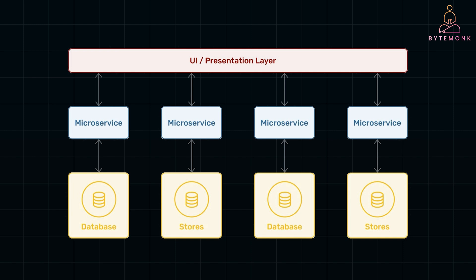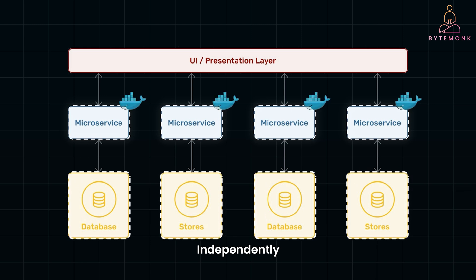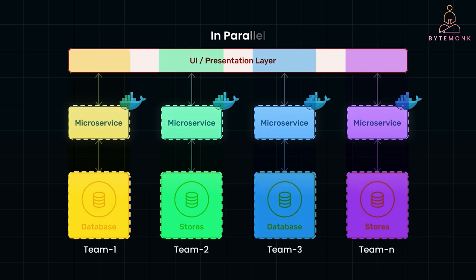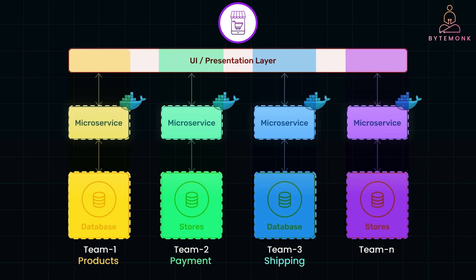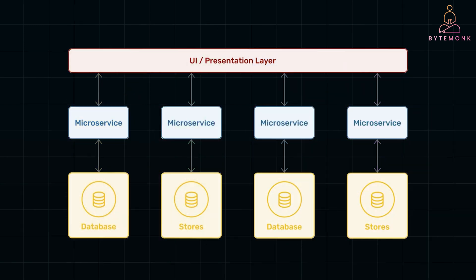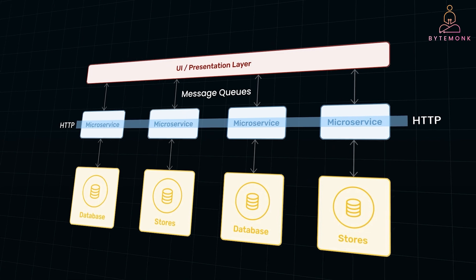Instead of building one large application, developers started breaking the application into small, independent services. Each microservice is responsible for handling a single business function — like user authentication, order processing, or payment handling. Each of these services operates independently, has its own database, and can be deployed separately. In an e-commerce app, for example, you could have separate services for managing products, processing payments, and handling shipping. These services communicate with each other using lightweight protocols like HTTP or message queues, but they are still self-contained.